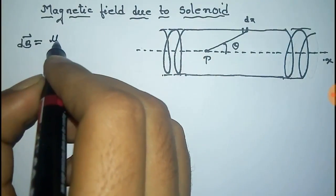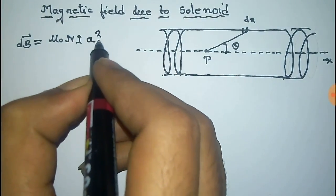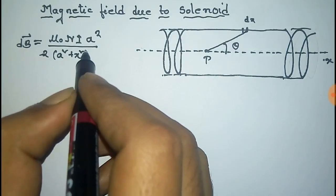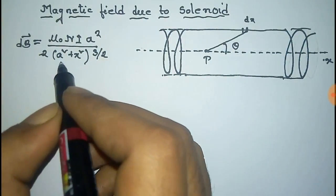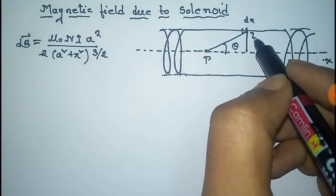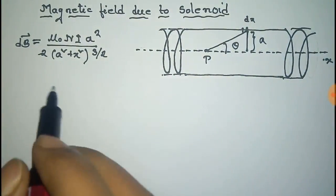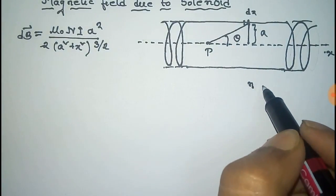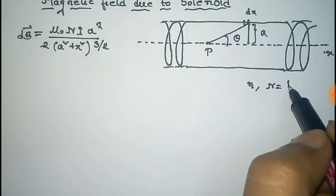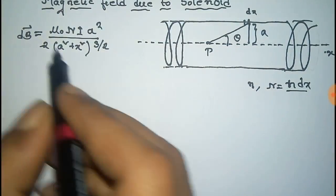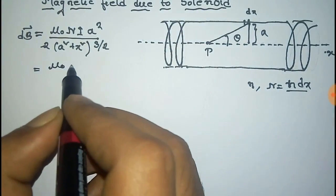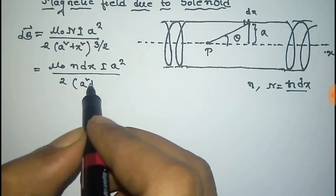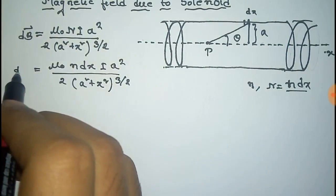For element dx at P, dB is equal to μ₀n dx, where n is the total number of turns per unit length. That is the number of turns of wire. This is the formula and a is the radius of the cylinder. If small n is the number of turns per unit length, then the number of turns in dx is n·dx. So dB equals μ₀n dx·I·a² divided by 2(a² + x²)^(3/2).